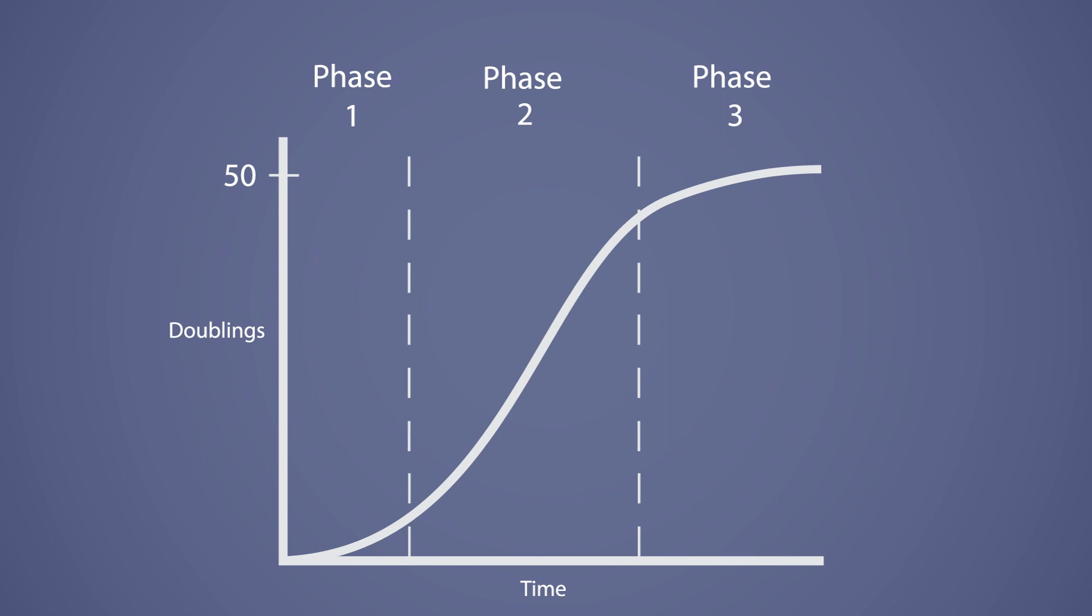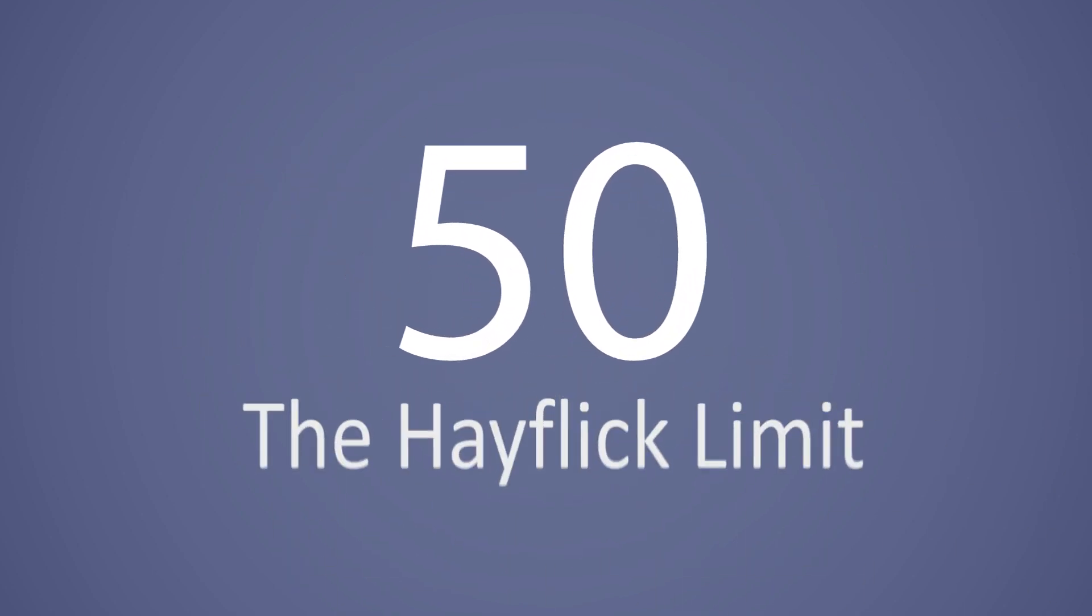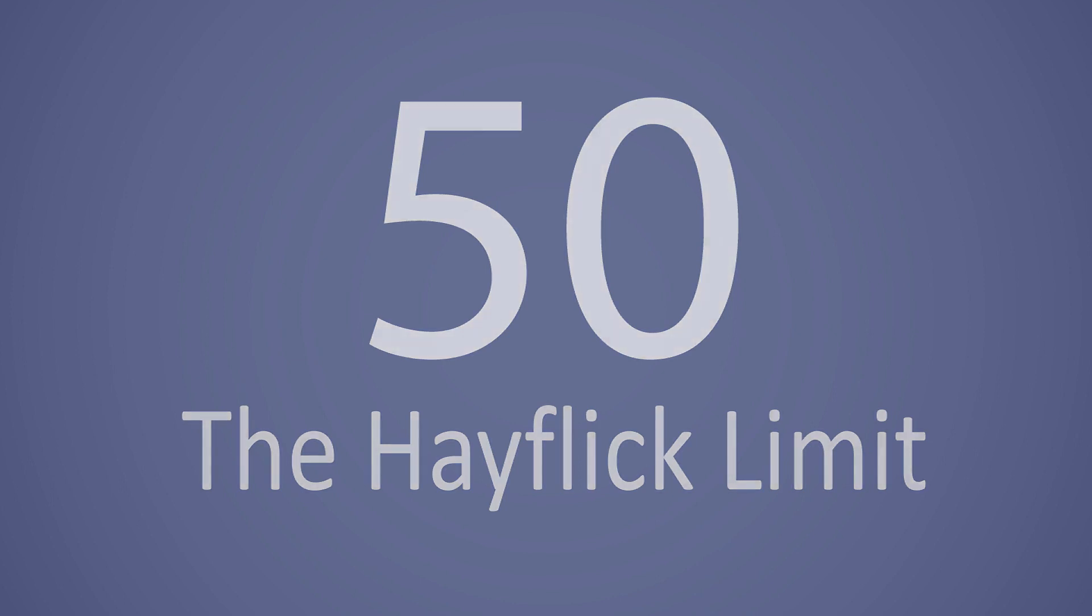Cells generally can divide around 50 times, which we now call the Hayflick limit. So what is the cause of mortality?